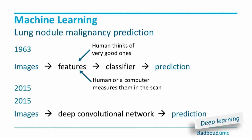These convolutional neural networks are pretty old — already 30 to 40 years old. But with new computing power and more layers of neurons, these deep learning systems — 'deep' meaning deep layers — have become very powerful.